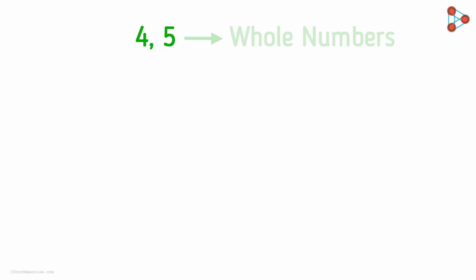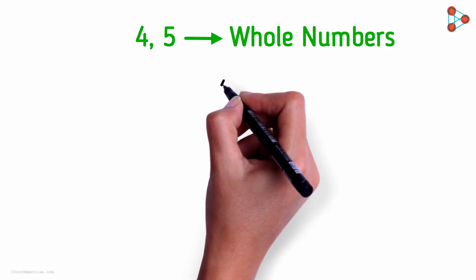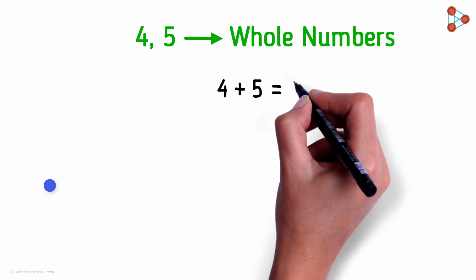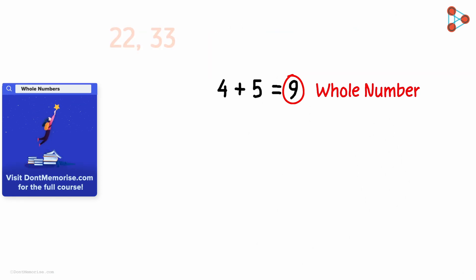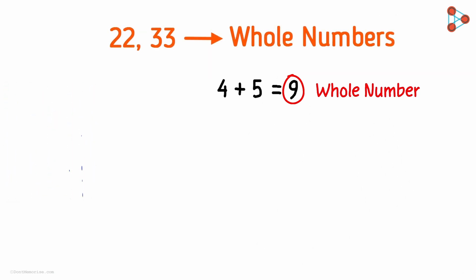We know that 4 and 5 are whole numbers. What is 4 plus 5? It's 9. 9 is also a whole number. Even the numbers 22 and 33 are whole numbers. What is 22 plus 33? You're correct! It's 55. And 55 is also a whole number.